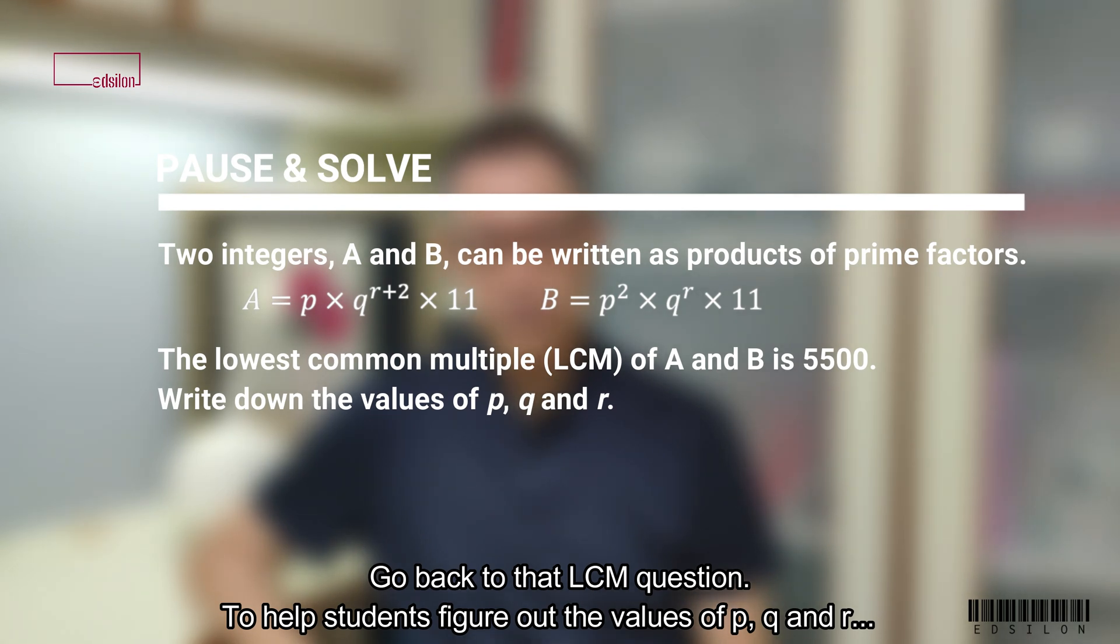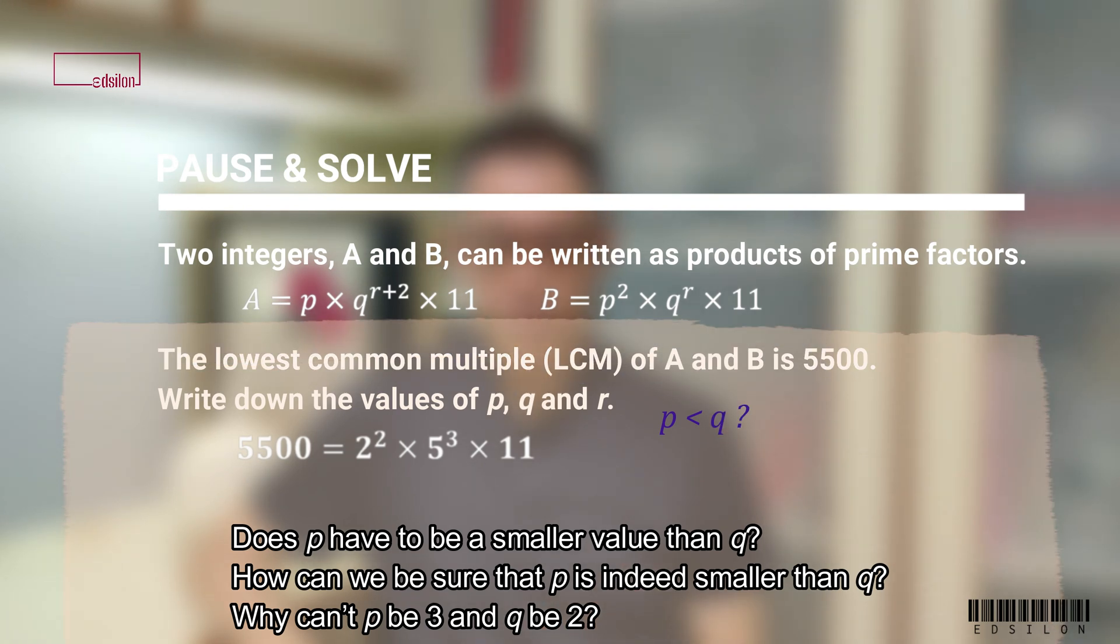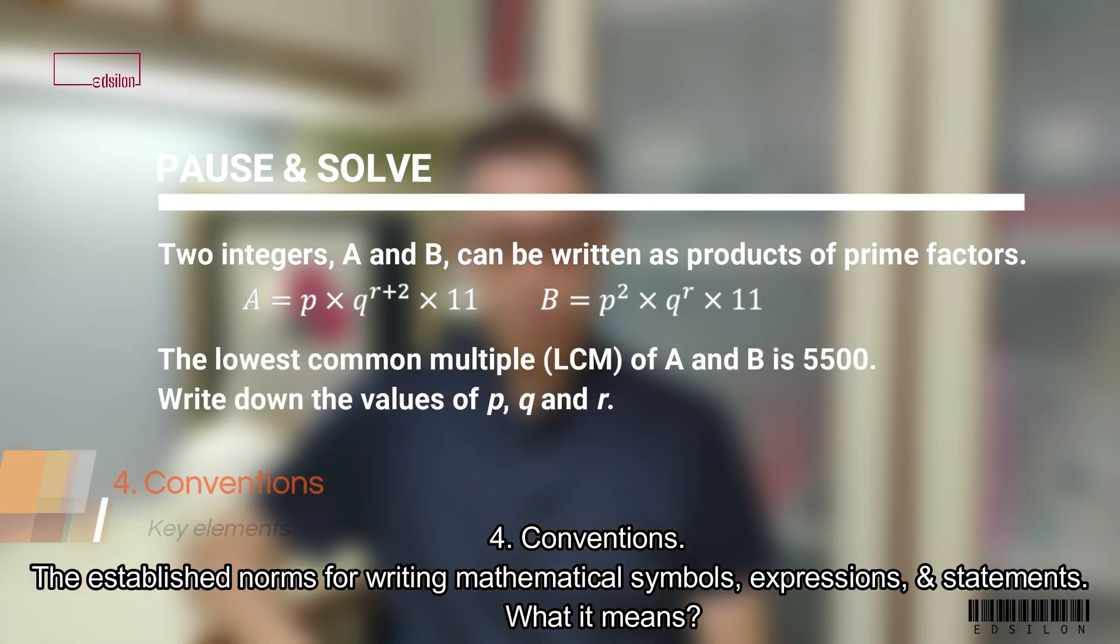To help students figure out the values of P, Q and R, can ask questions like, Does P have to be a smaller value than Q? How can we be sure that P is indeed smaller than Q? Why can't P be 3 and Q be 2?